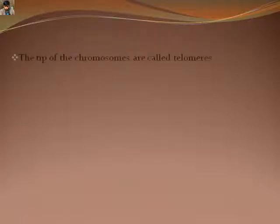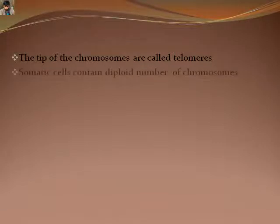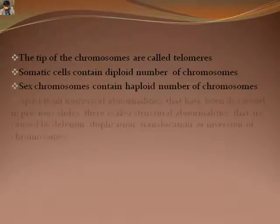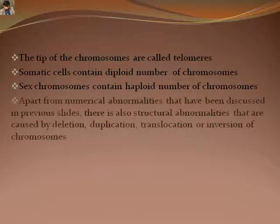Other than numerical abnormalities, there are some structural abnormalities seen in humans. If deletion of some parts, duplication, translocation, or inversion of chromosomes takes place, disorders that may result include Cri-du-chat syndrome, WAGR syndrome, and many others.